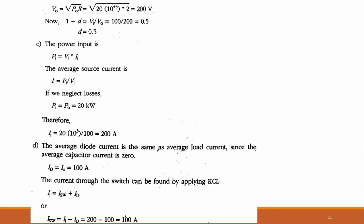The average diode current equals the average load current since average capacitor current is zero in steady state: I_D = I_0 = 100 ampere. The switch current is found from: I_in = I_switch + I_D, so I_switch = I_in − I_D = 200 − 100 = 100 ampere.